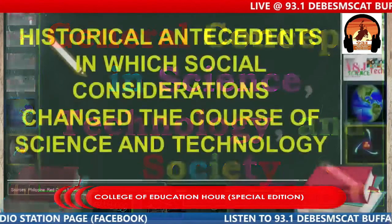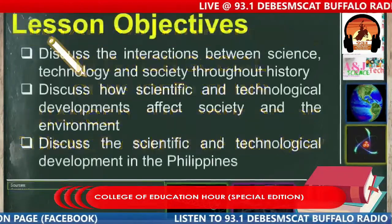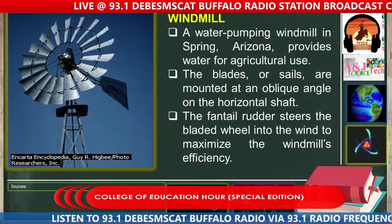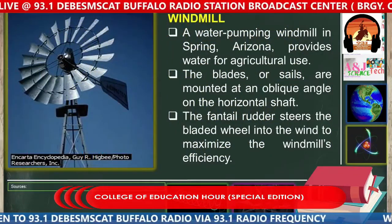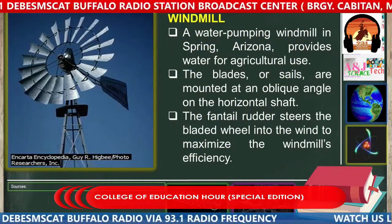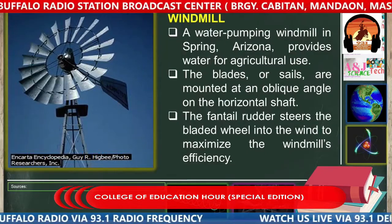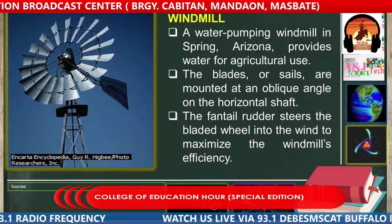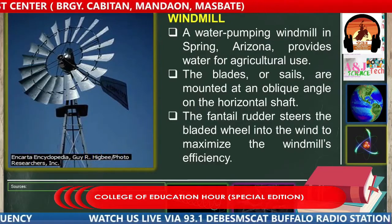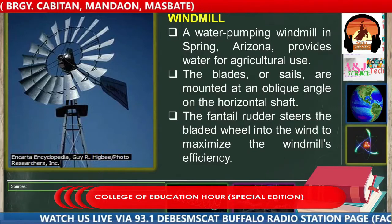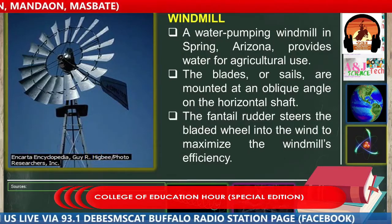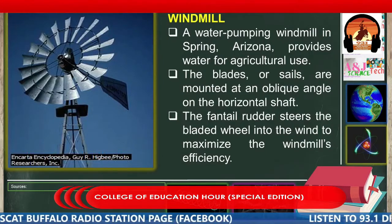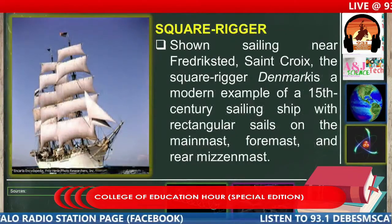The first topic is the discovery of the windmill. There were already windmills before — a water-pumping windmill in Spring, Arizona provides water for agricultural use. In other areas we also have windmills. The blades or sails are mounted at an oblique angle on the horizontal shaft, and the tail rotor steers the bladed wheel into the wind to maximize the windmill's efficiency.